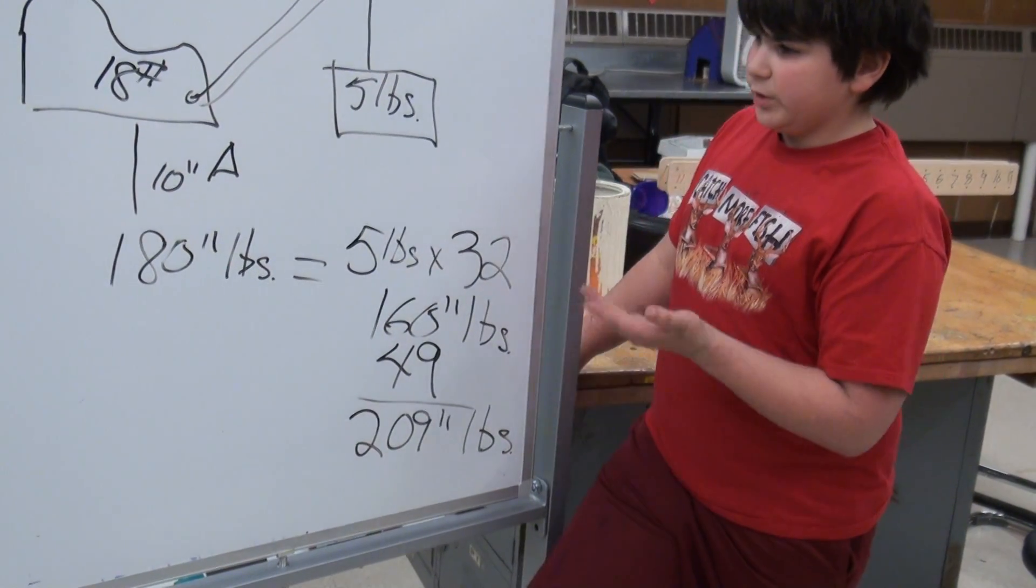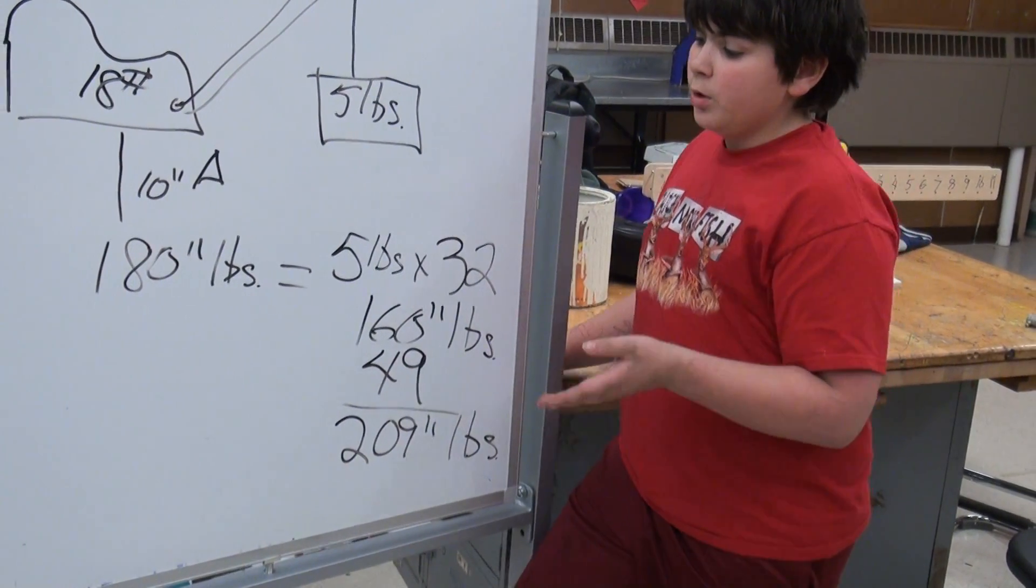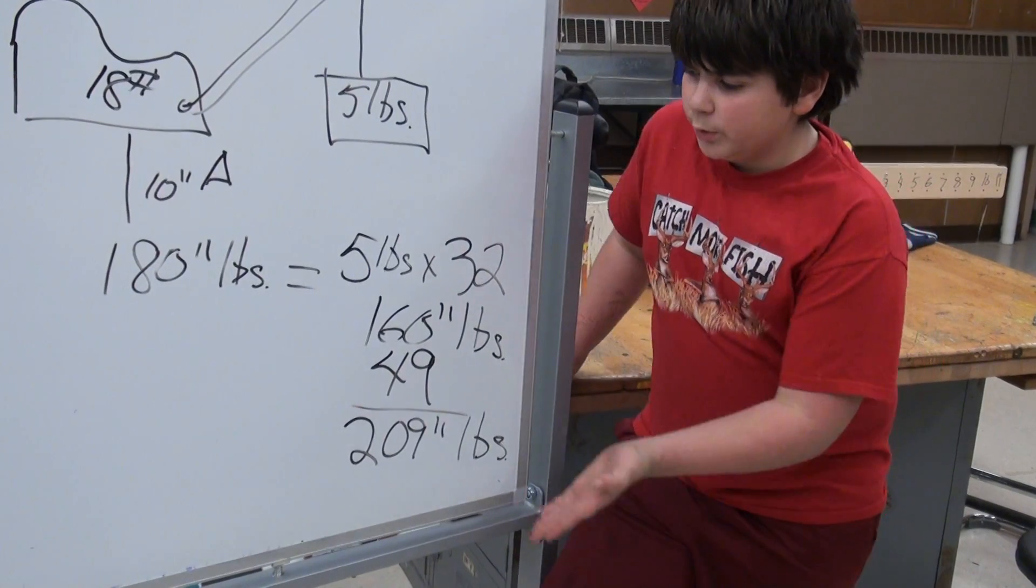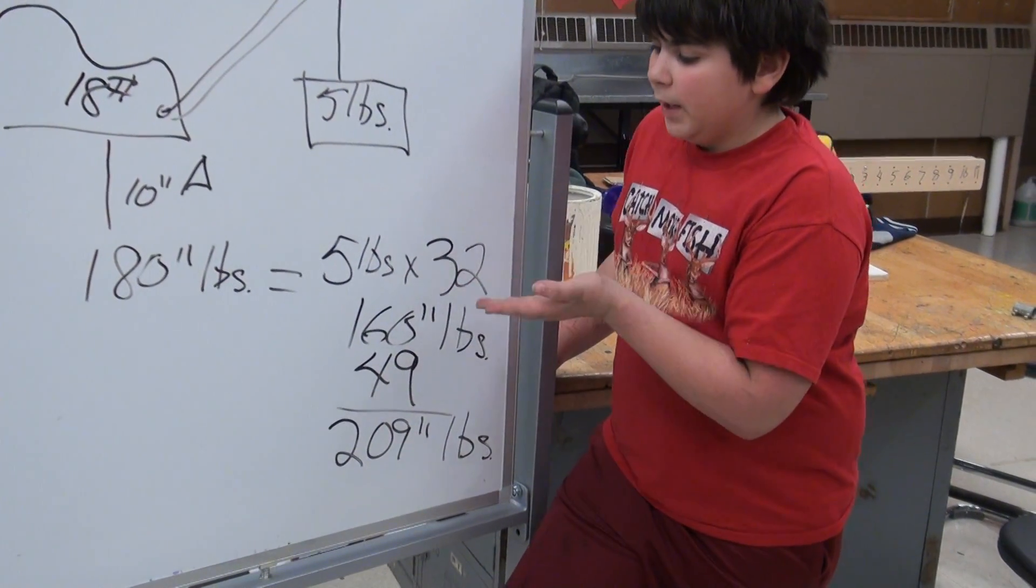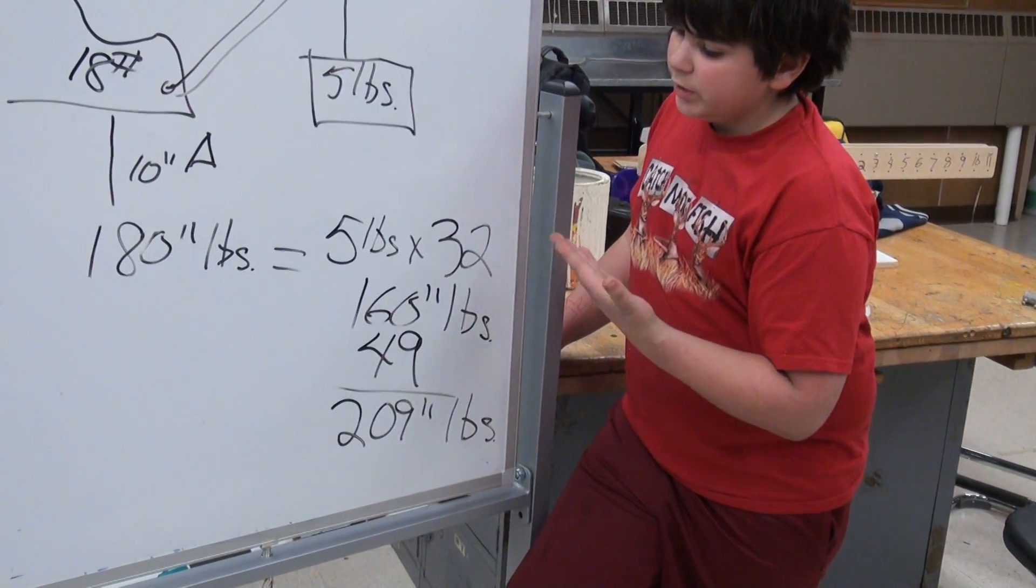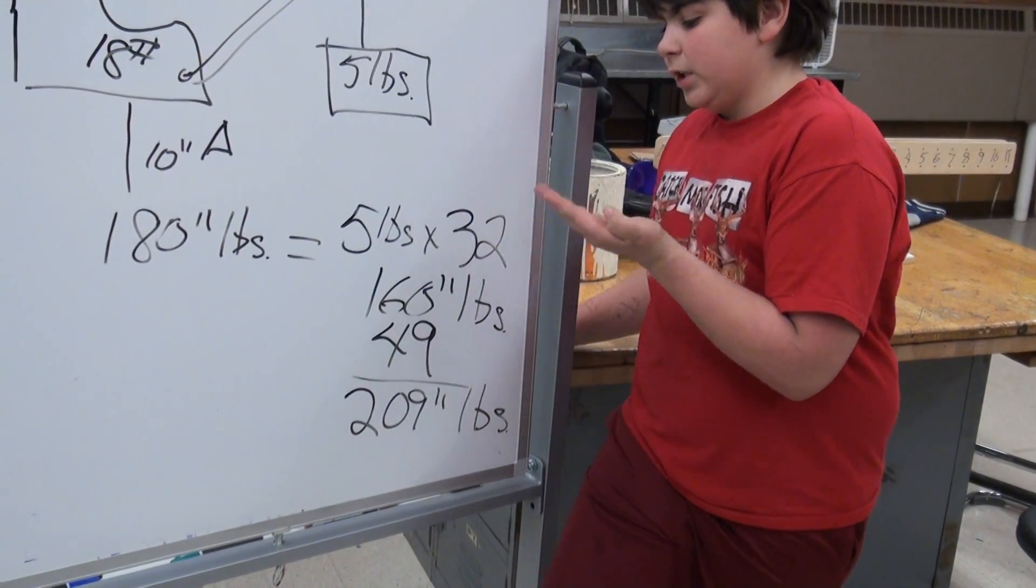Well, the distance is now 32. So what we would do is 5 pounds times 32 inches equals 160 inch pounds.